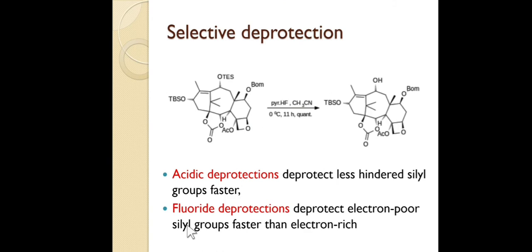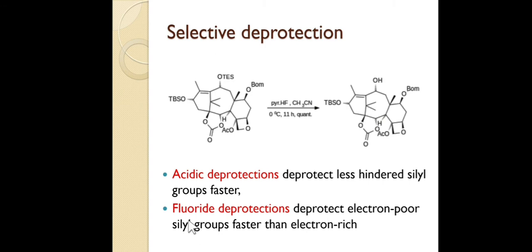There are conditions that allow selective deprotection. If we have two silyl-protected secondary alcohols — for example one TBS and one TES group — under acidic conditions the less hindered silyl group leaves faster. So TES (triethylsilyl), being less hindered than TBDMS, is cleaved first. Under fluoride conditions, F⁻ being electron-rich will attack more electron-poor silyl groups, so electron-poor silyl groups cleave faster with fluoride reagents.